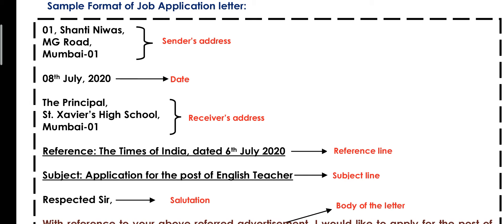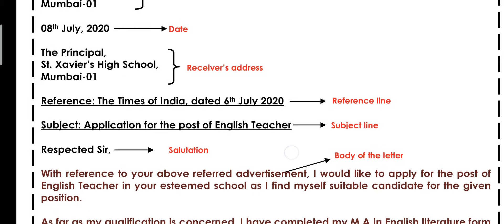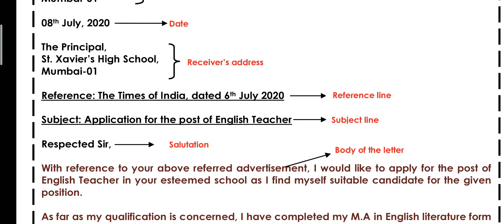Next, leave one line and write the subject. In the subject, you write a brief summary of what you are applying for. For example, I have written here: 'Application for the Post of English Teacher.' This is the subject line. If it doesn't fit in one line, no problem — you can use a second line.